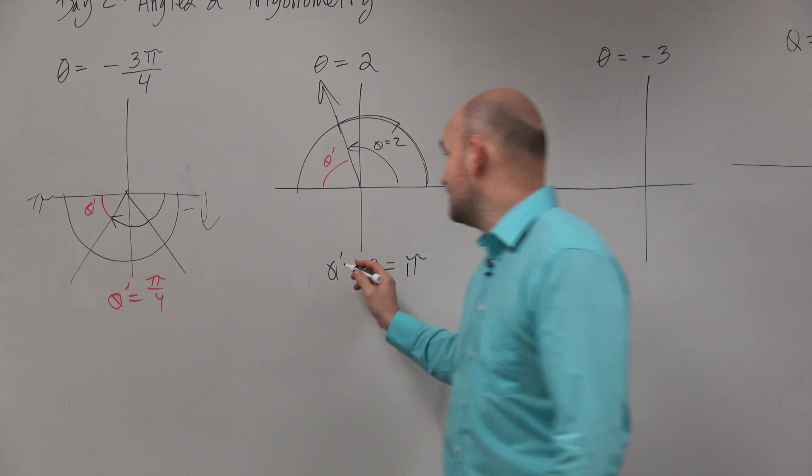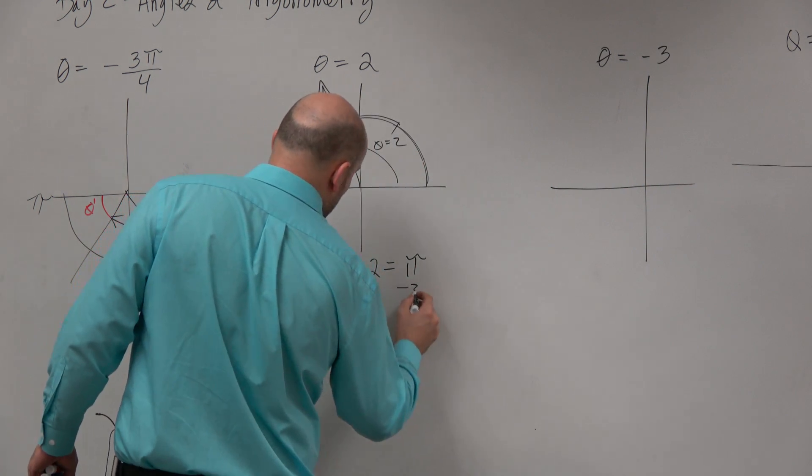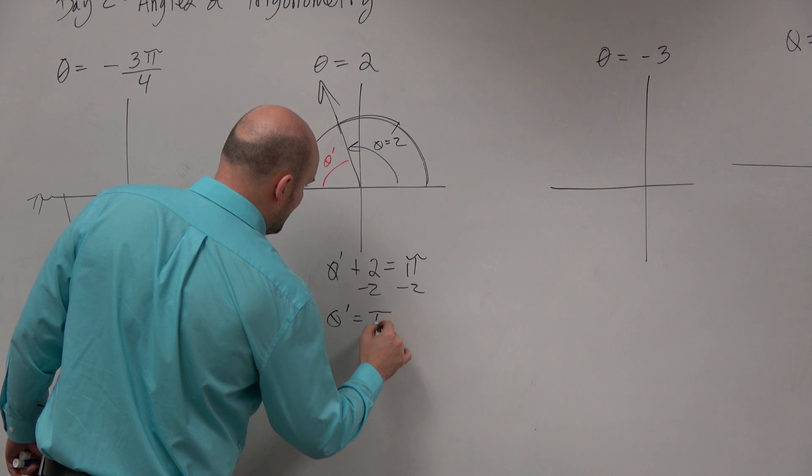So to solve for the theta prime, just subtract 2 on both sides. Theta prime equals pi minus 2.